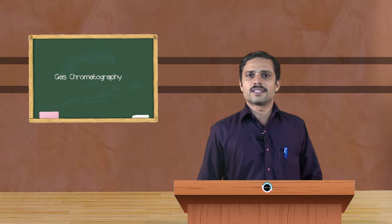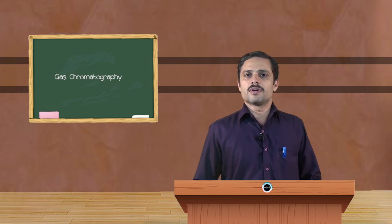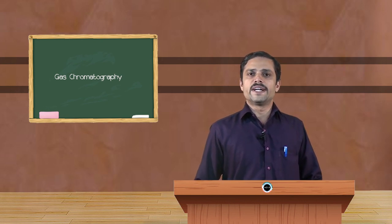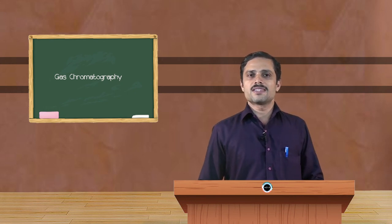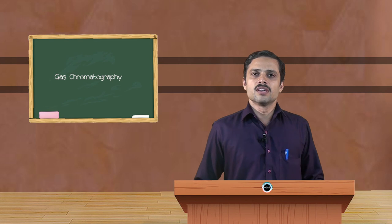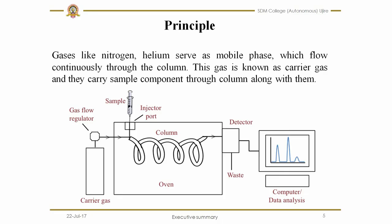As I said, the gases like nitrogen, helium serve as mobile phase which flow continuously through the column. These gases are known as carrier gases because they carry the sample, the volatile sample in the column till the end. From the beginning till the end, they carry the components present in the volatile sample.